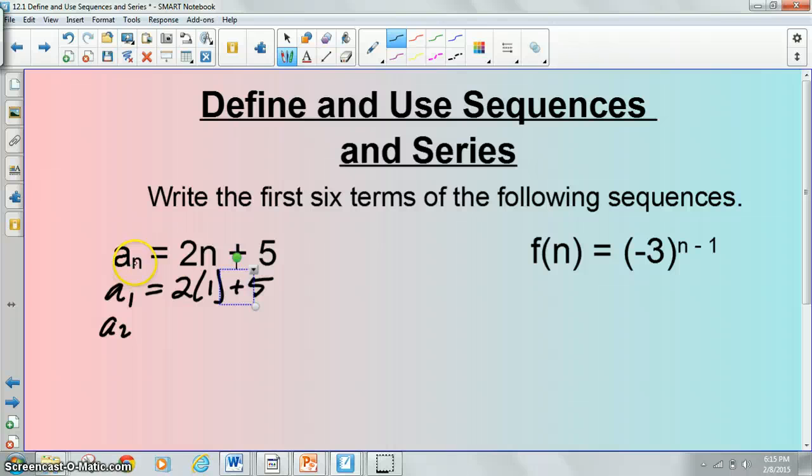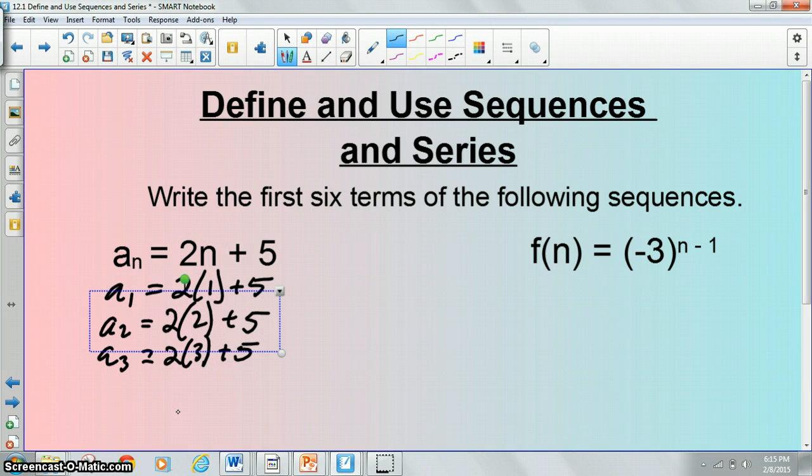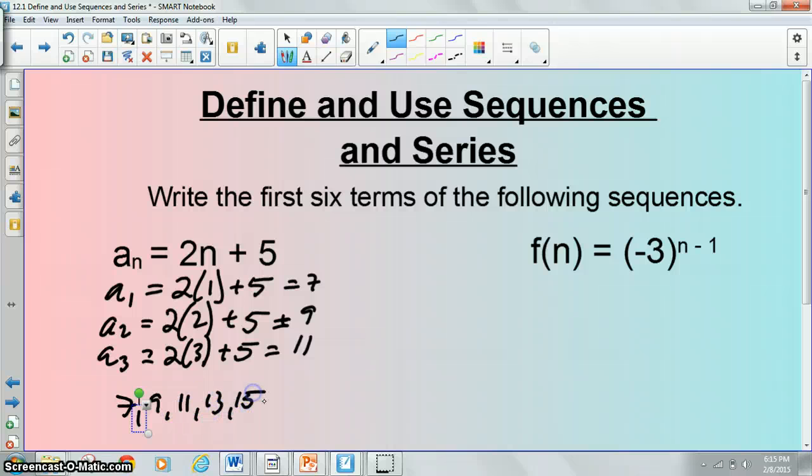a sub 2, now you're going to be plugging in a 2 wherever there's an n. 2 times 2 plus 5. The third term, a sub 3, is 2 times 3 plus 5. And you would do that up until you had done that six times. So, the first term is 2 times 1 plus 5, which is 7. The second term is 4 plus 5, which is 9. 6 plus 5, which is 11. And then I think we can pick up the pattern 7, 9, 11, 13, 15, and 17. The first six terms of the following sequences.